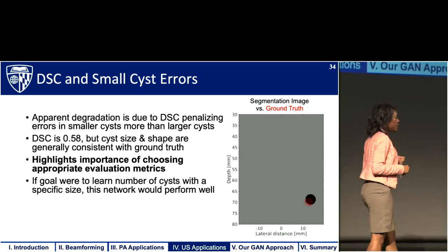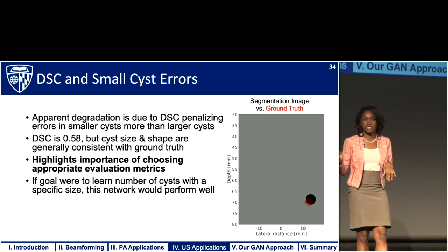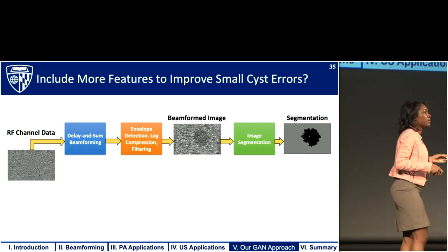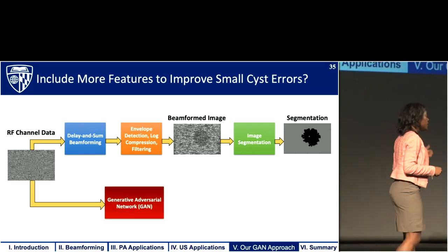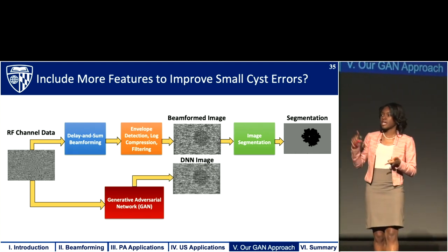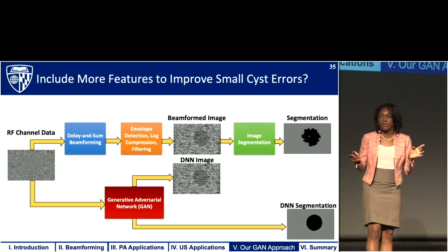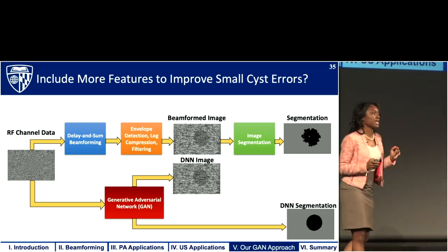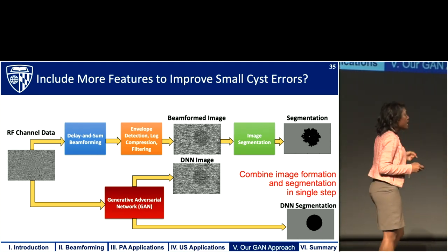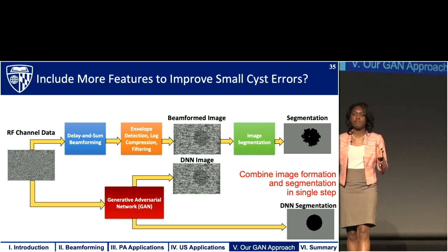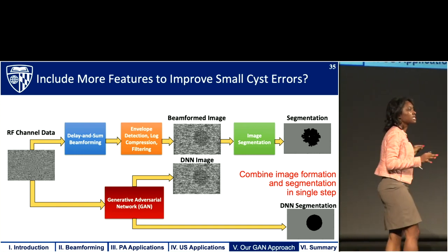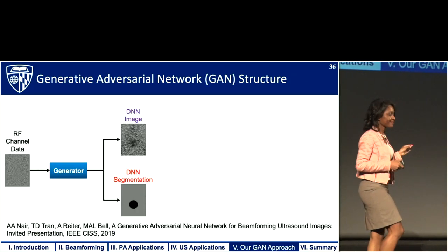We set out to explore how we can further improve the Dice similarity coefficients for smaller cysts. This led us to think about including more features when training our network, and specifically to explore a Generative Adversarial Network. With this network we learn not only the segmentation but also the B-mode image — two outputs from a single input. Taking a step back, this network structure tells us that we can combine both image formation and image segmentation in a single step, which led me to think more broadly about how we can build networks that take a single input and produce multiple outputs, since all those outputs are based on the same raw data.